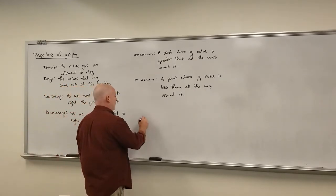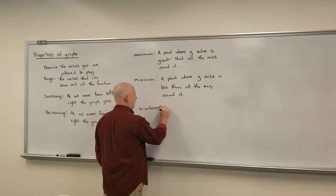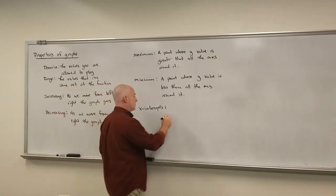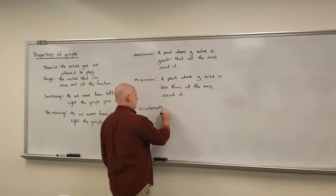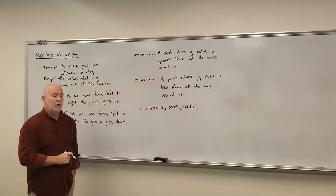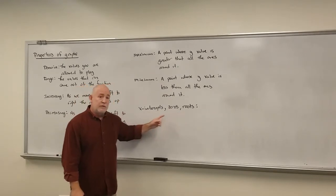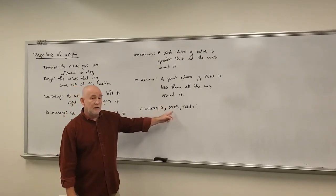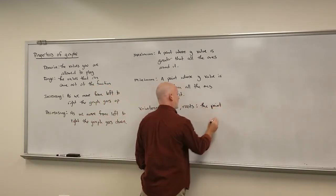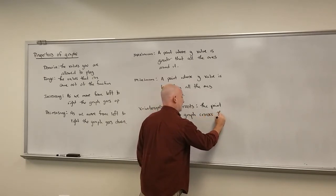One other thing we'll look at on these graphs are the x-intercepts. We've dealt with x-intercepts before, but we're going to name them slightly differently. I'm going to put three words that all basically mean the same thing: x-intercepts, zeros — we're going to use that a lot this semester — and roots. These all mean the same thing: the point where the graph crosses the x-axis.